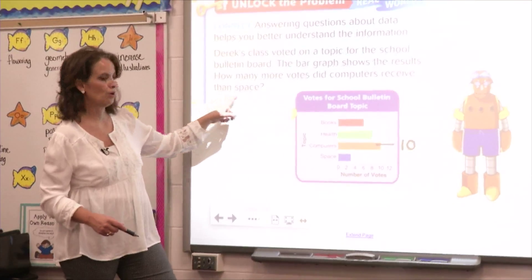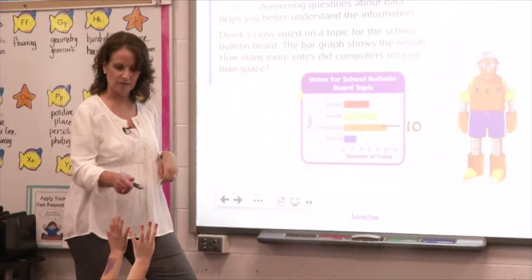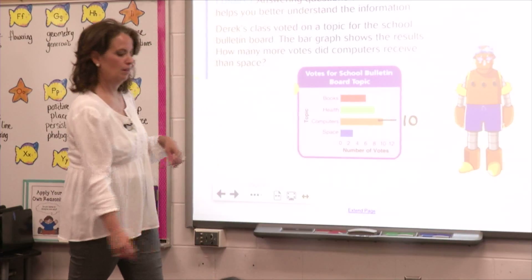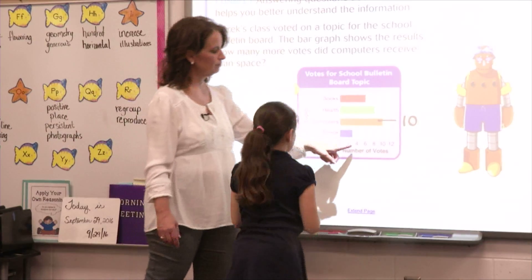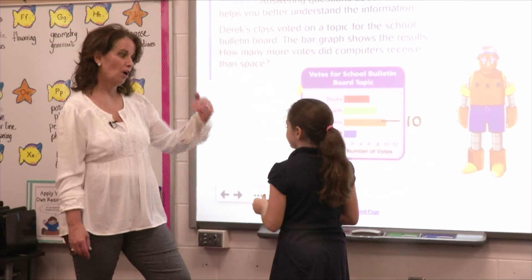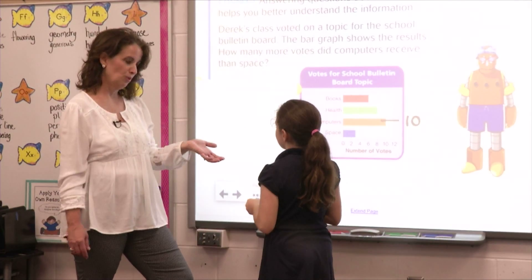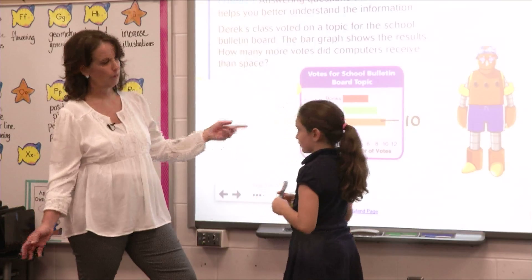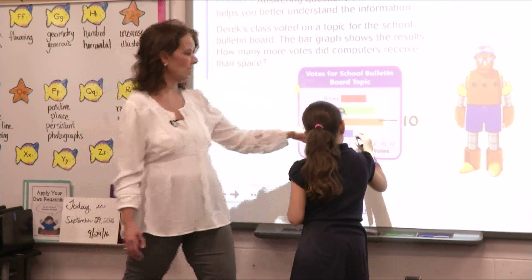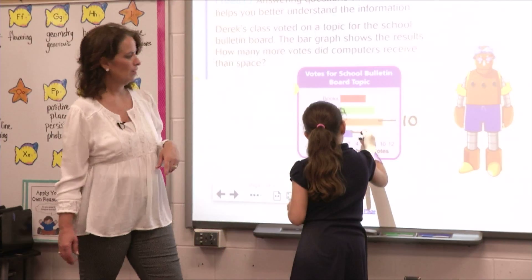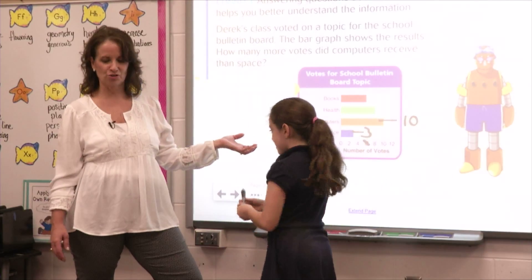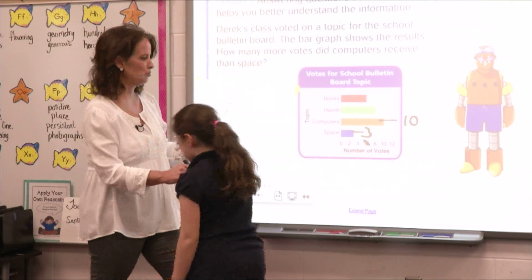And how many voted for space? — Kira? — They voted for... Is it four? — No, it's three because it's like right in the middle. — It's in the middle. So it's not all the way to the four, but it's not at the two. What's in the middle of two and four? — Three. — So why don't you draw a line and write a three. Take your pens. So now we have our numbers. I always do this first so that we don't make a mistake when we're adding and subtracting.